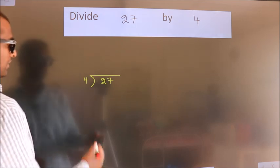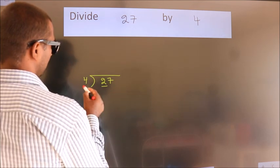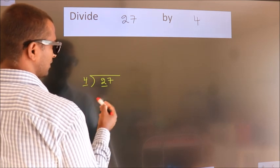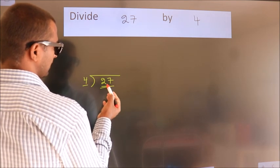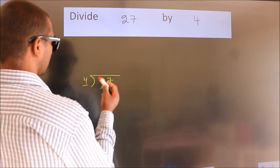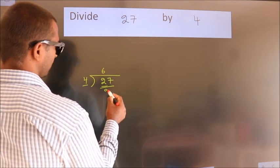Next. Here we have 2, here 4. 2 is smaller than 4, so we should take 2 numbers. 27. A number close to 27 in 4 table is 4, 6, 24.